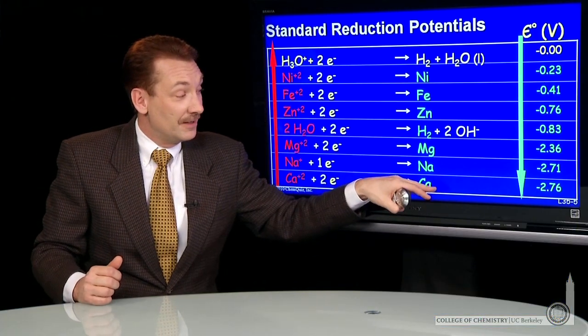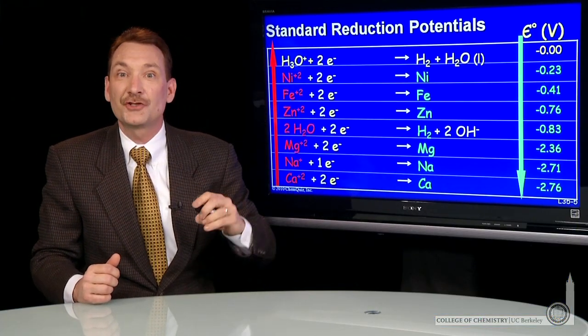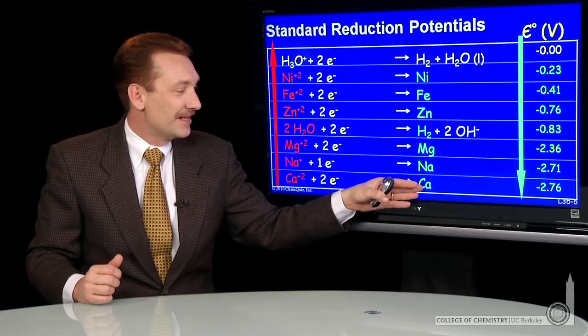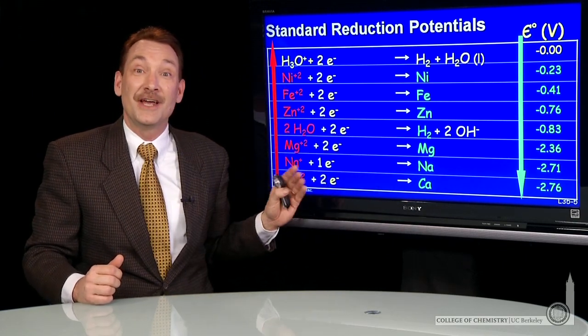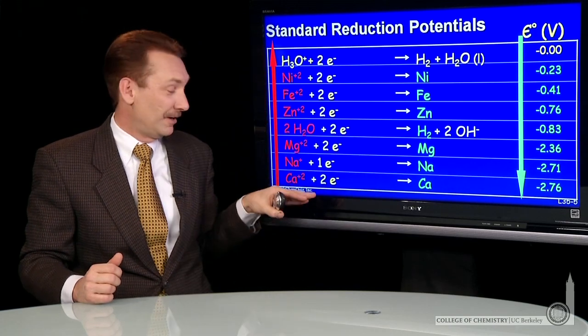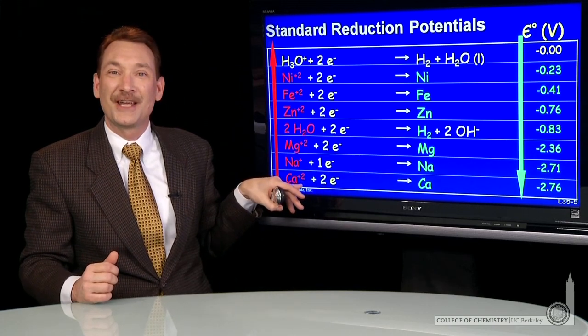In contrast, it means calcium metal is a strong reducing agent. That is, the preferred direction is essentially the reverse direction to give up electrons and form calcium ions.